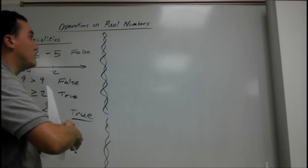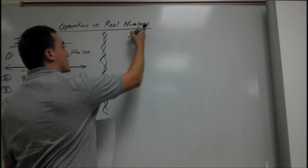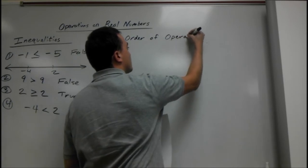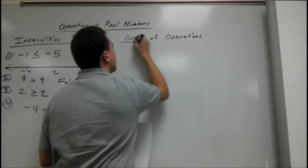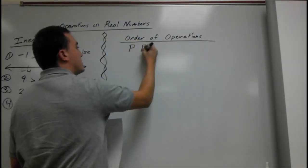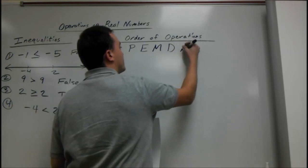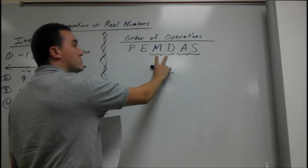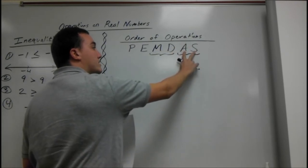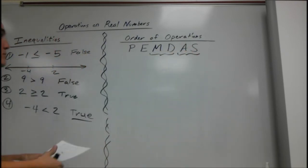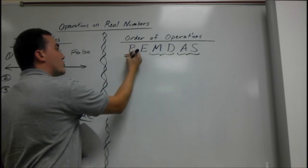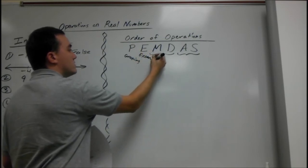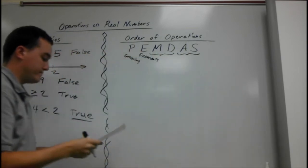The last thing I want to go over is PEMDAS. And this is also called order of operations. Please excuse my dear Aunt Sally, PEMDAS. When we're doing this multiplication and division and addition and subtraction, those can go together. So you could do these in either order, or you could do these in either order. It doesn't matter, as long as you get the math right. First is parentheses or any form of grouping. And this one's exponents. And you have to do it in this order or you're going to get it wrong.